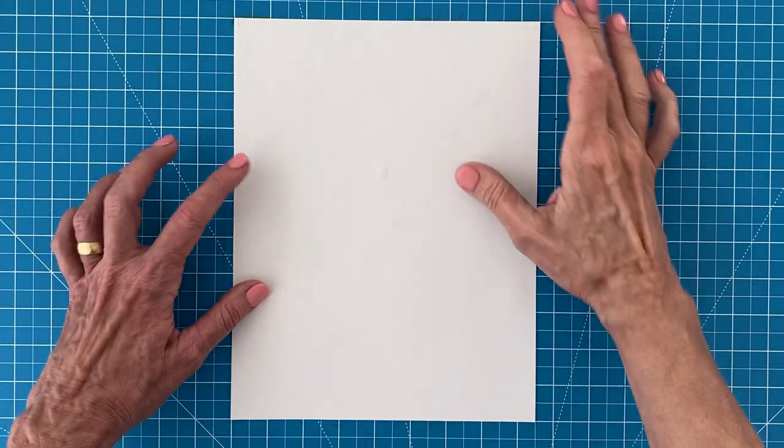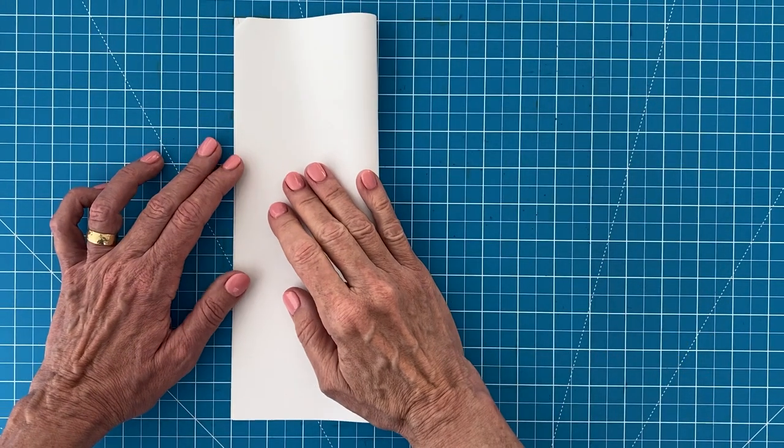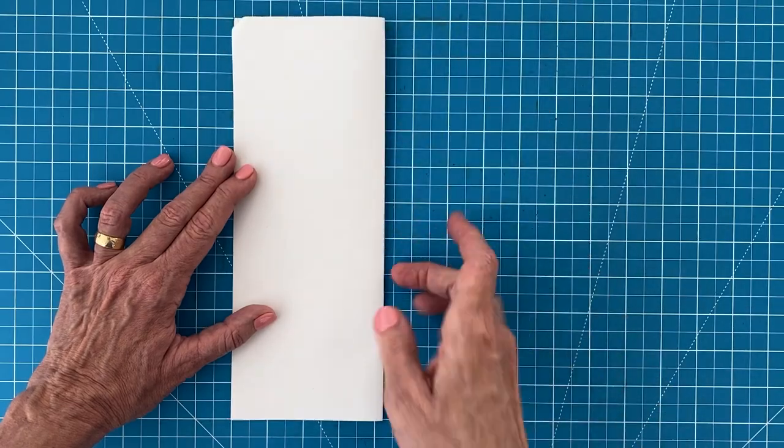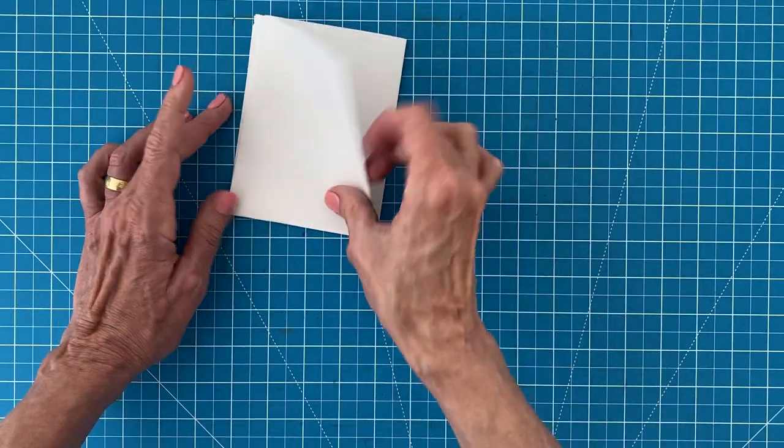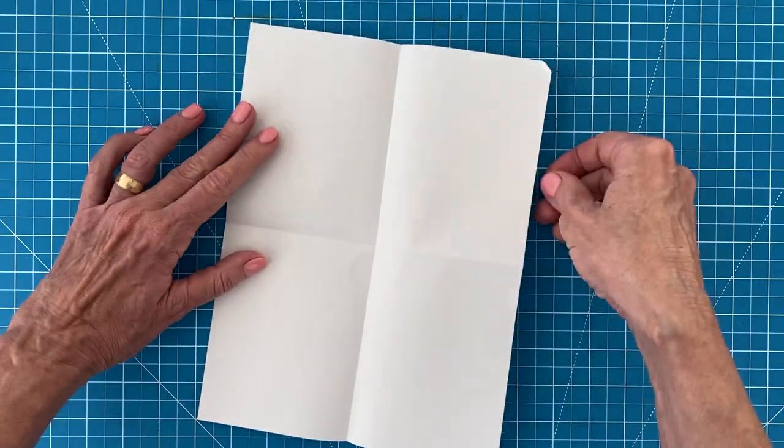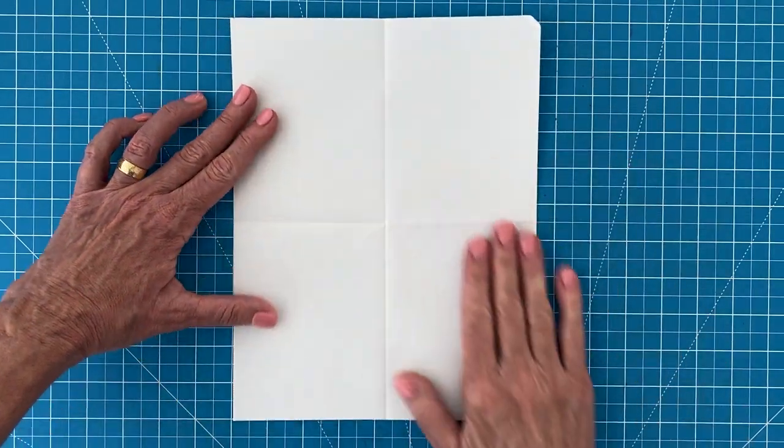Now before you begin your actual drawing, it really helps to make some centered guidelines on your paper. By folding and creasing your paper in half in both directions, you'll be able to easily see where those center guidelines are.